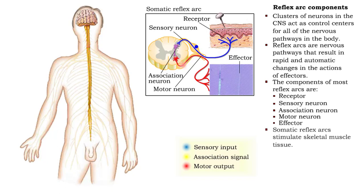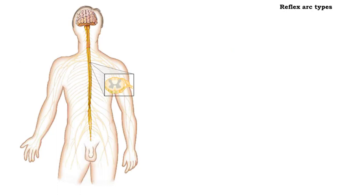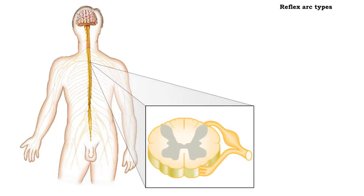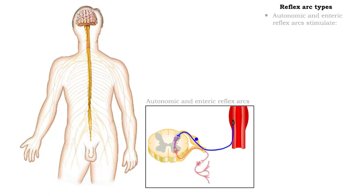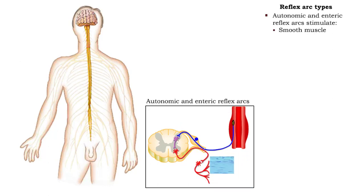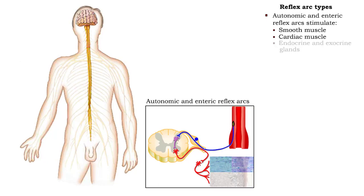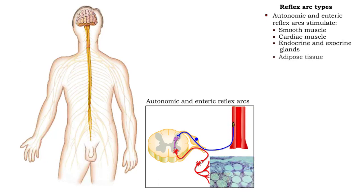Somatic reflex arcs stimulate skeletal muscle tissue. Autonomic and enteric reflex arcs stimulate smooth muscle tissue, cardiac muscle tissue, endocrine and exocrine glands, and adipose tissue.